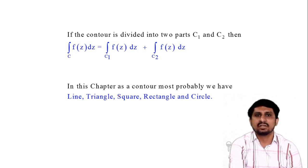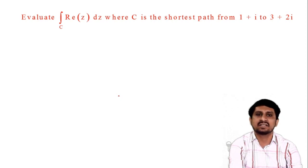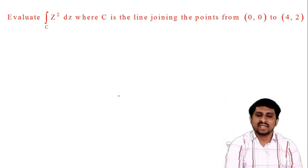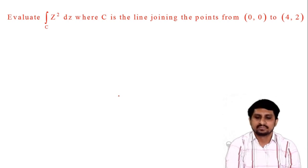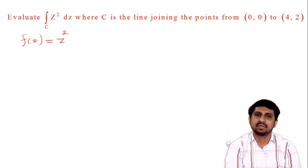Let's see how we can solve another very important example. If you remember, in last lecture we already solved this example: integration of the real part of z dz, where the contour is the shortest path joining the two points 1+i to 3+2i. Now let's solve our next example: integration of z squared, where f(z) is nothing but z squared.